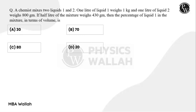So we need to convert everything to one unit. Let's convert everything into grams. Liquid 1 has 1 kg, which is 1000 grams, and liquid 2 has 800 grams in one liter.